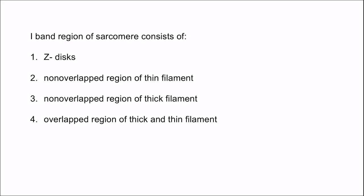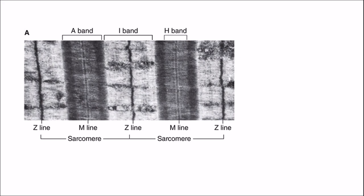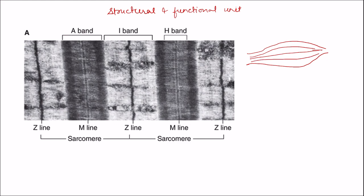Let us go into detail about the structure of the sarcomere and what are the various bands and zones it consists of. Sarcomere is the structural and functional unit of skeletal muscle. Each skeletal muscle consists of various muscle fibers arranged end to end, and these muscle fibers are actually the cells of the skeletal muscle. Inside each muscle fiber there are a lot of proteins known as filaments, arranged in repeating units of sarcomeres.